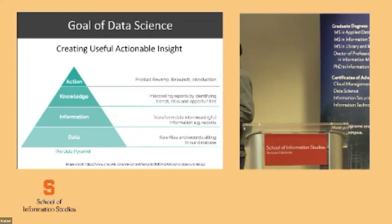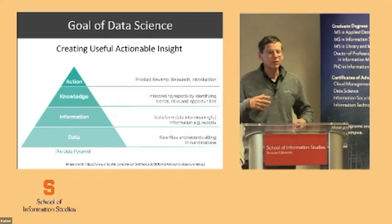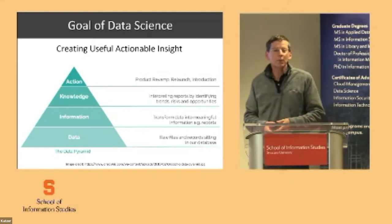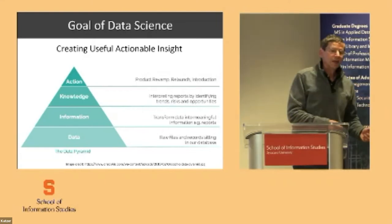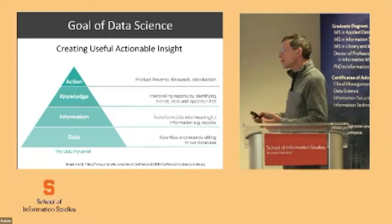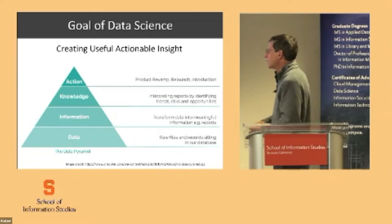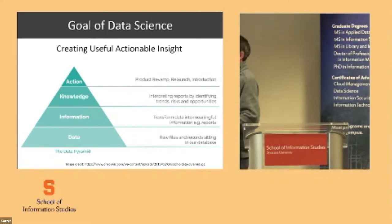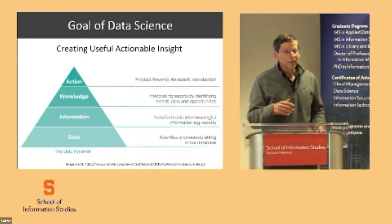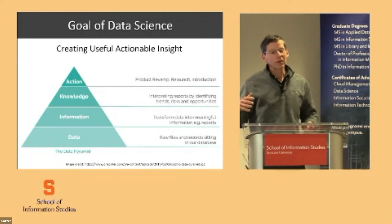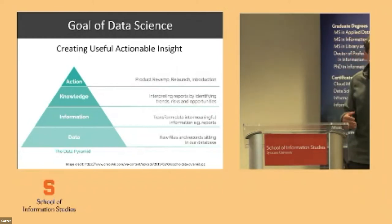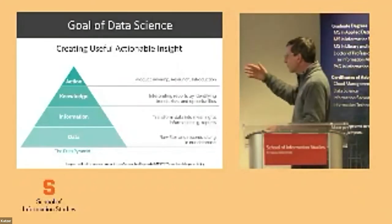We can think about going up a level into what is information. A simple example would be: we sold 82 chocolate bars last month. That's some information. You can do some things with that, but not a lot. Going up another level, you can think about knowledge. Knowledge could be things like trend analysis — you can look at over the last year we've been increasing our sales of chocolate bars by 20% a month. That's some knowledge.